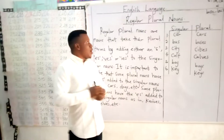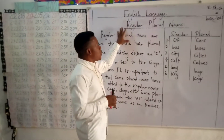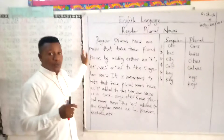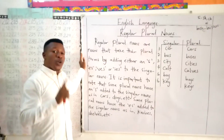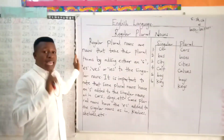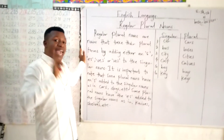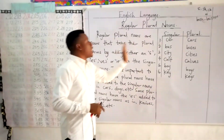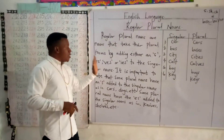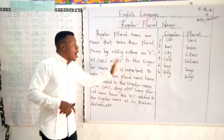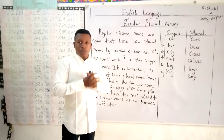Now I'm going to give us an exercise on this topic, regular plural nouns. Please, when you're doing your exercise, keep in mind that your regular plural nouns must end with either S, ES, VES, or IES. Thank you.